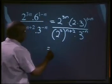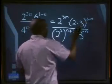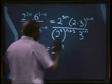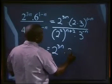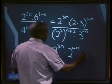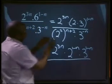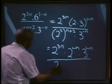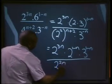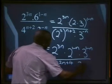Simplify the top — that will give us 2 to the power of 3n. Use our distributive law: that means 1 minus n is multiplied to 2 and 1 minus n to 3, giving us 2 to the power of 1 minus n multiplied by 3 to the power of 1 minus n, divided by 2 to the power of 2n plus 4, times 3 to the power of minus n.